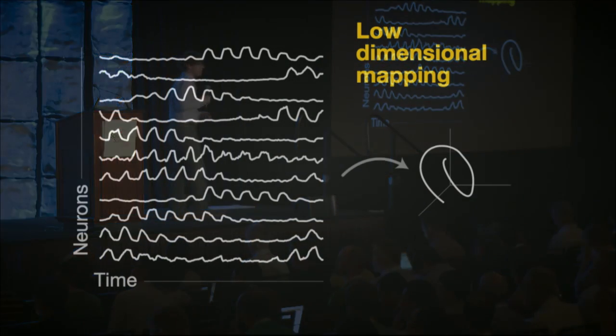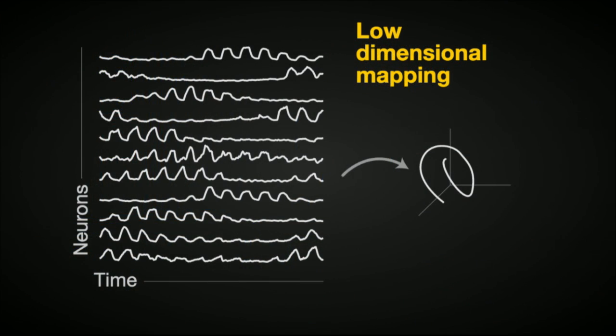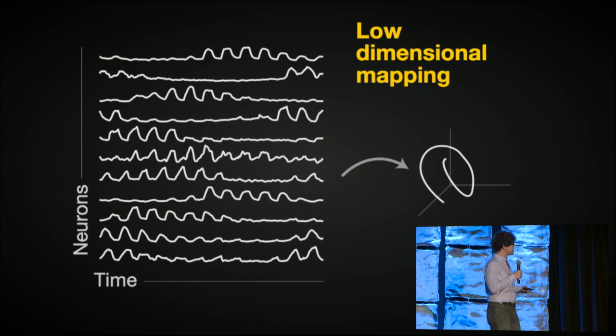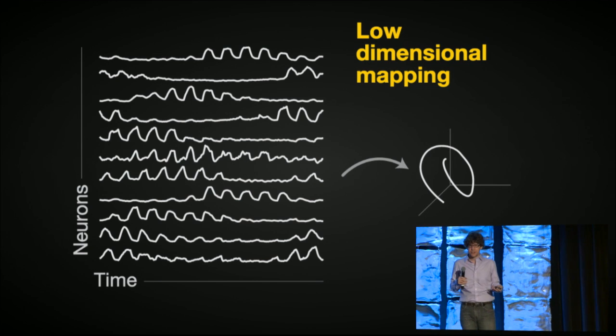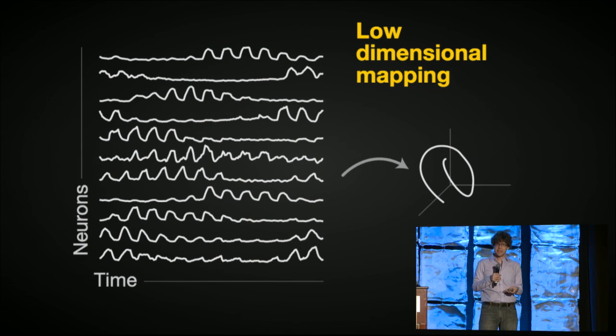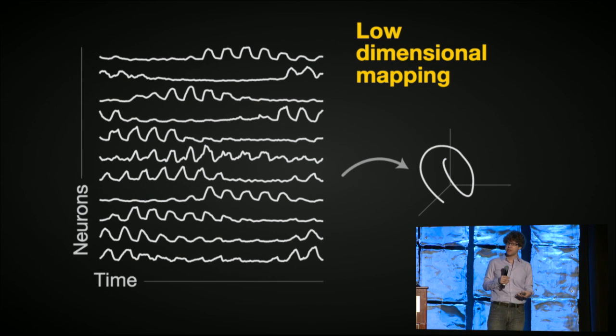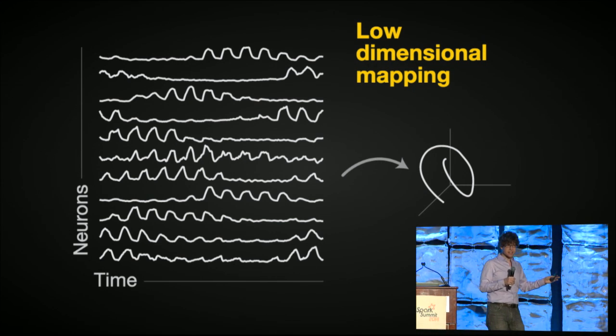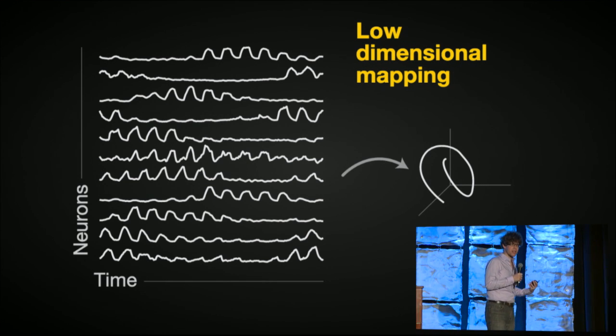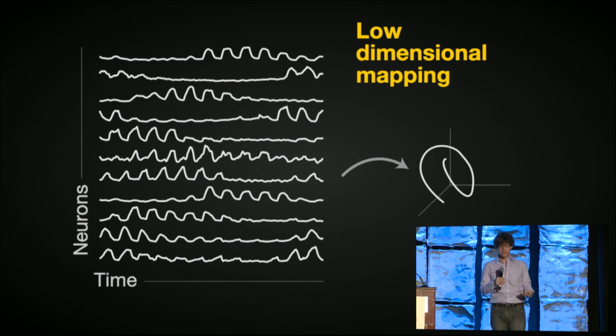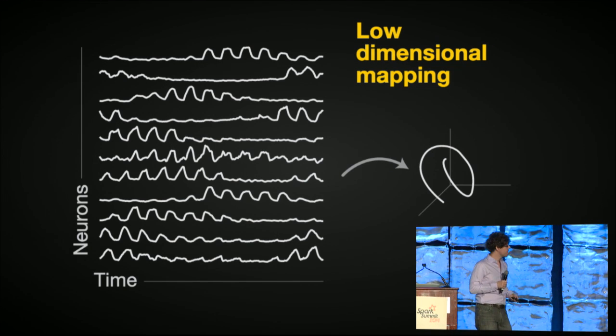So again, these data are time series data. We have the time series of response of every neuron. And one of the challenges to understanding the joint structure of a large collection of time series is that it's really hard to look at thousands, hundreds of thousands of time series simultaneously, and to understand their structure. One strategy we can use is dimensionality reduction, where instead of looking at lots and lots of time series, we can project them into a low-dimensional embedding, or a low-dimensional space, using things, for example, like PCA, which many of you are probably familiar with.